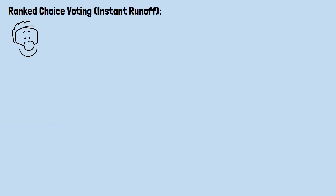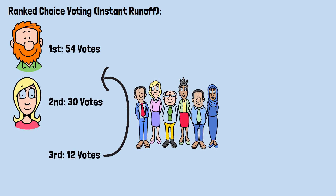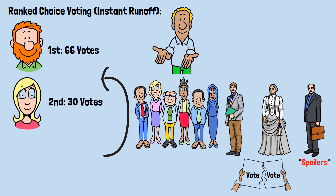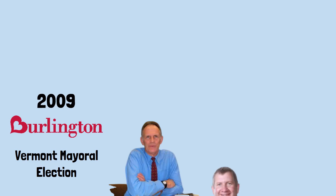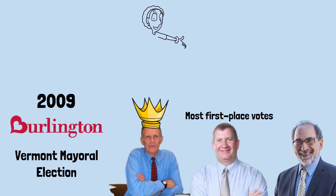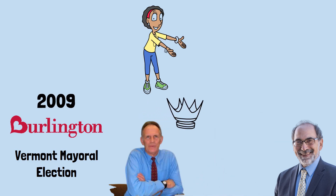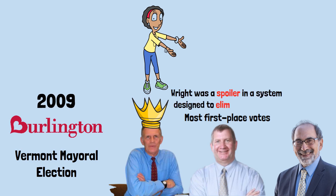Ranked choice voting — instant runoff — has everyone rank all candidates, eliminates the lowest ranked and redistributes their votes based on second choices, repeating until someone has a majority. This is supposed to fix the spoiler problem. Which criterion does it violate? Still independence of irrelevant alternatives. In the 2009 Burlington, Vermont mayoral election using ranked choice voting, Kurt Wright got the most first-place votes, but after redistribution, Bob Kiss won. The weird part: if Wright hadn't run, Andy Montrell would have won, beating Kiss head to head. Wright was a spoiler in a system designed to eliminate spoilers.